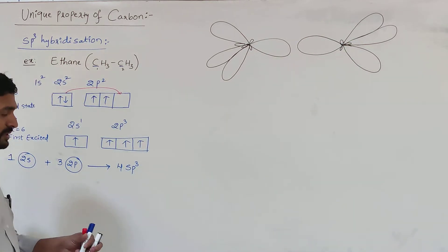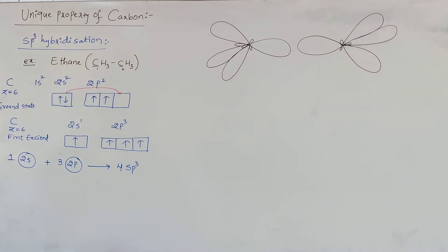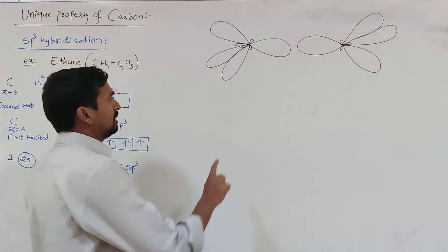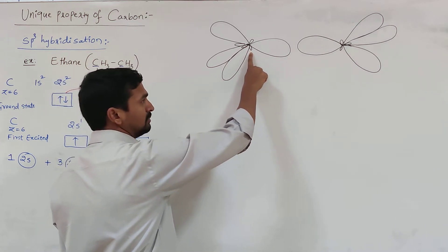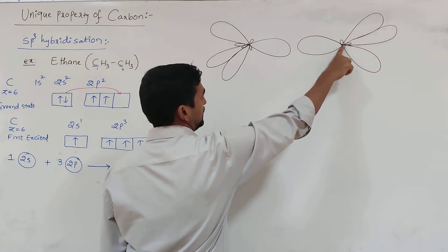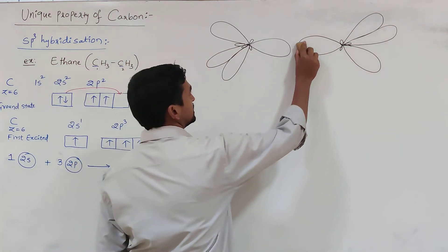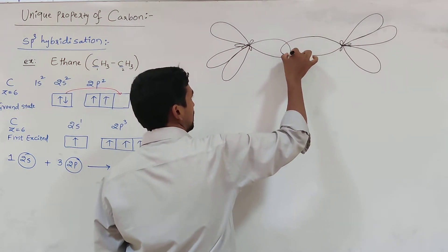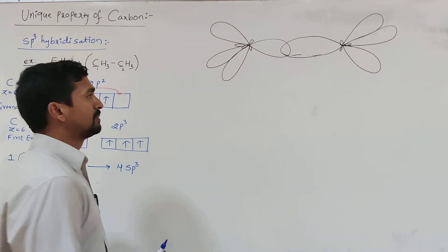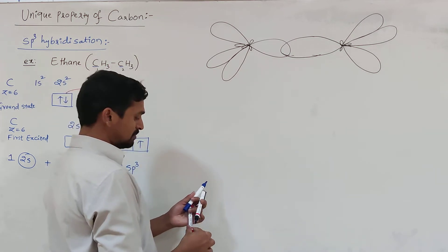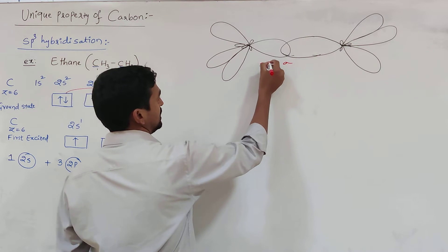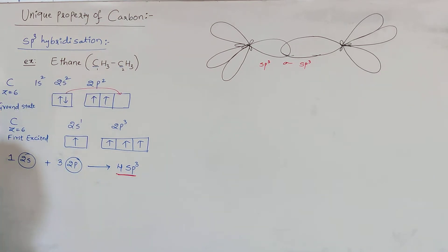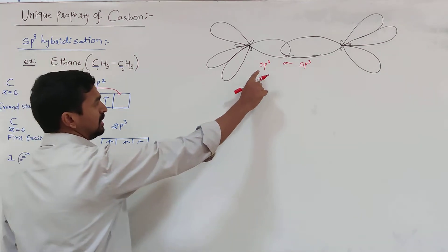These are the four sp3 hybrid orbitals around the first carbon atom, and similarly around the second carbon atom, also oriented in tetrahedral geometry. In the formation of ethane, first both the carbon atoms are linked together by one sigma bond. The sp3 hybrid orbital of one carbon atom axially overlaps with the sp3 hybrid orbital of the other carbon atom. These two sp3 hybrid orbitals overlap to form the sigma bond. Around each carbon atom, four sp3 hybrid orbitals are present; out of the four, one is already involved in the C-C bond, so three are left.